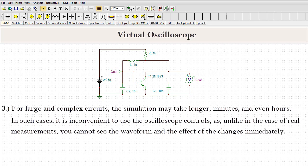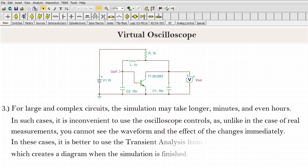In such cases, it is inconvenient to use the oscilloscope controls as, unlike in the case of real measurements, you cannot see the waveform and the effect of the changes immediately. In these cases, it is better to use the transient analysis from the analysis menu of TINA, which creates a diagram when the simulation is finished.